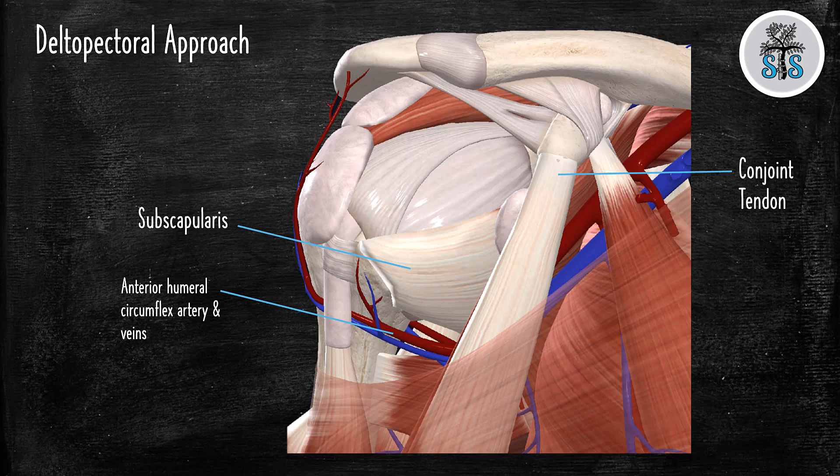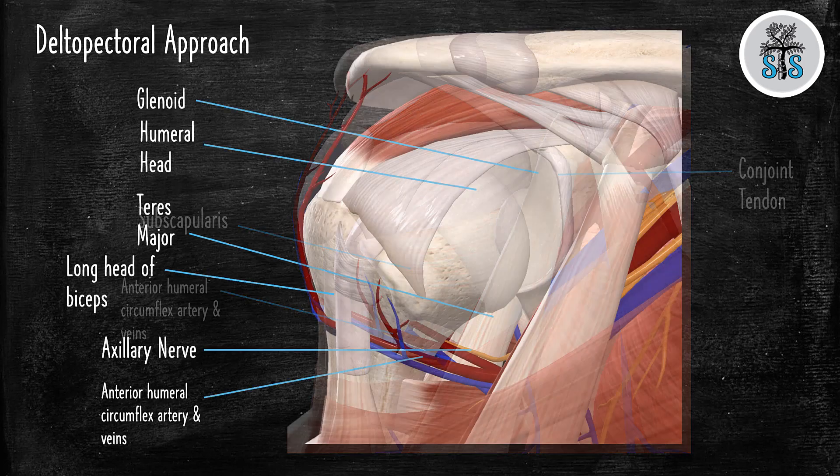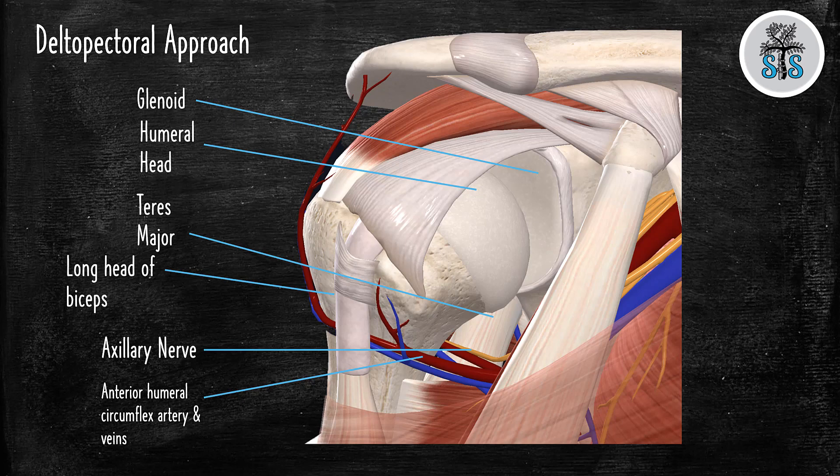You can also see the subscapularis at this point. And if we're going to be doing a hemiarthroplasty total or reverse, we will take down the subscap to enter the joint space. At the most inferior aspect of the subscap, we can find the three sisters, which are made of the anterior circumflex artery and their two veins. And this is also another very common pimp question. Once the subscap is tagged and taken down off of the lesser, a capsulotomy will be performed and the joint will be entered. The anatomy you can see from here is the long head of the biceps, the axillary nerve, which runs just inferior to the glenoid. And oftentimes this is found so we know exactly where it is. So when we're placing retractors in our actual replacement, we know where it is and it won't be in danger. So knowing the anatomy of this approach is very, very important. And knowing the surrounding neurovascular structures and muscles will help you get not only points in terms of answering questions, but also make you more comfortable when going through this approach.